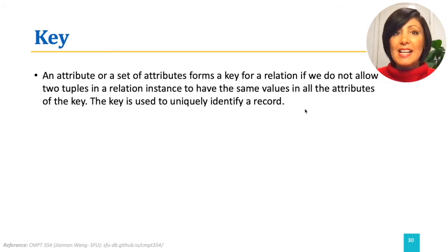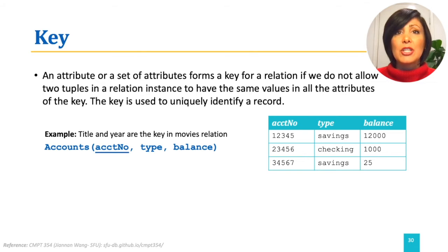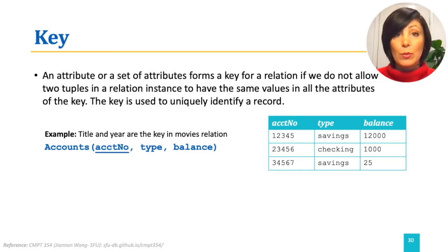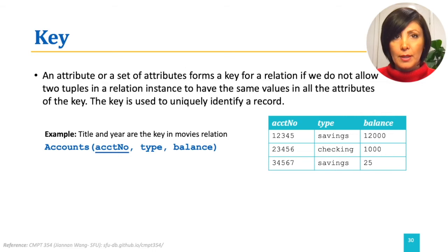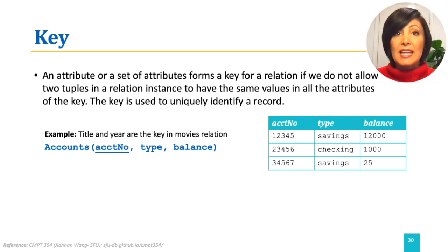For example, assuming a bank database, we have a relation called ACCOUNTS with fields ACCOUNT NUMBER, TYPE, and BALANCE. We do not want to have duplicate accounts, and we need an identifier that can help us uniquely identify the information about each bank account. We can do that using the field ACCOUNT NUMBER. In this case, ACCOUNT NUMBER is the KEY for the relation ACCOUNTS.